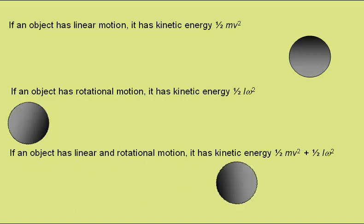If an object has linear and rotational motion, it has kinetic energy half mv squared plus half i omega squared.